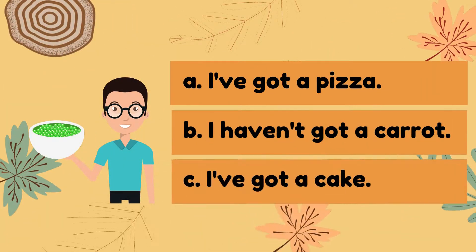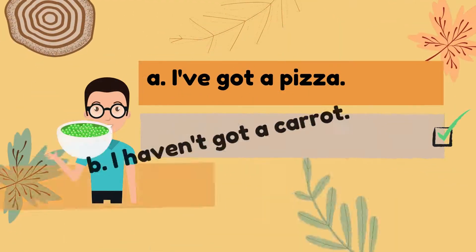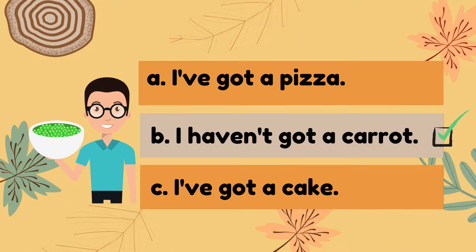Okay, next — look at the picture and choose the answer. A: I've got a pizza. B: I haven't got a carrot. Or C: I've got a cake. Do you know the answer? Yes, the answer is B — I haven't got a carrot.